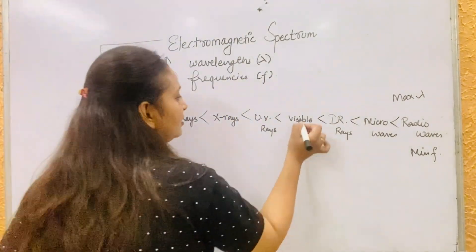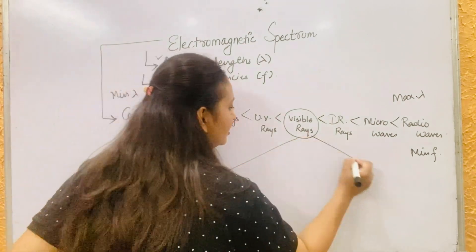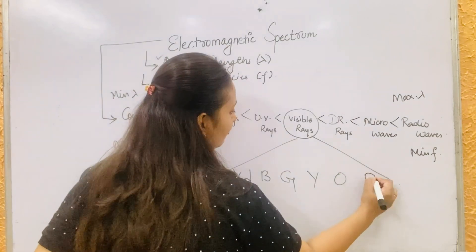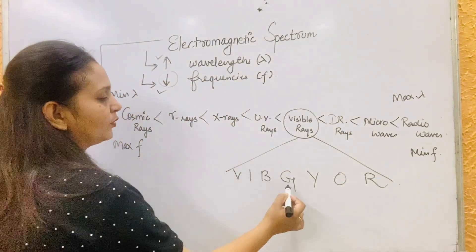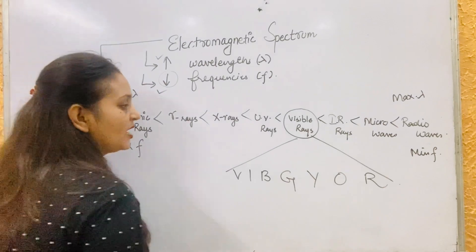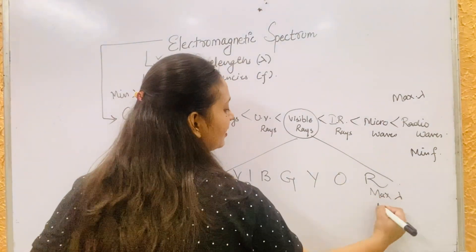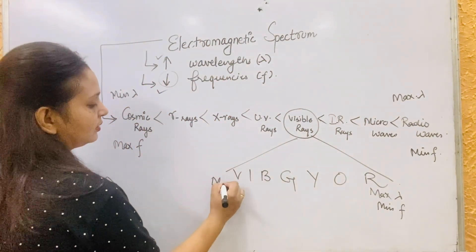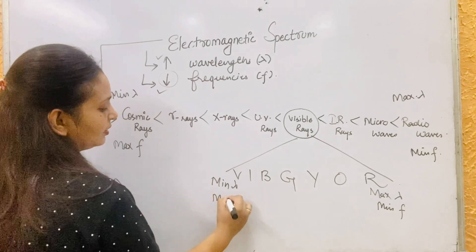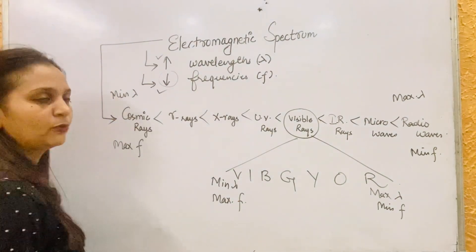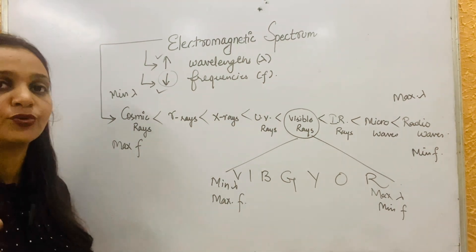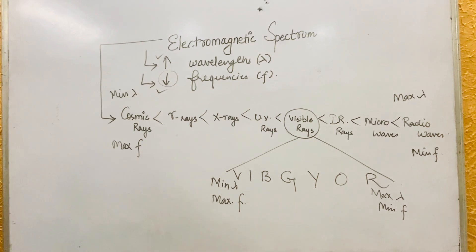The visible rays are further divided using VIBGYOR: Violet, Indigo, Blue, Green, Yellow, Orange, and Red. Red is the color with maximum wavelength and minimum frequency, while violet is the color with minimum wavelength and maximum frequency. This arrangement of these waves constitutes the electromagnetic spectrum. Students, note this down and then we shall move ahead to discuss various kinds of spectra.